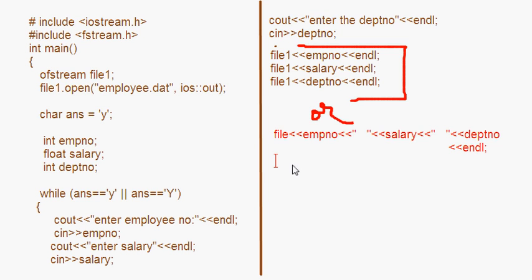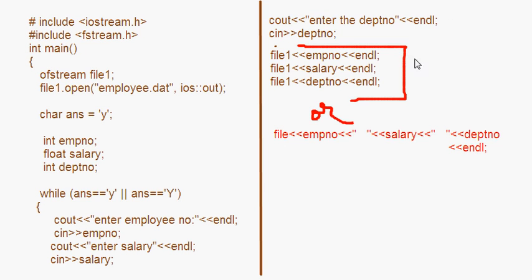So if we use this second format, the whole data for one employee will be written on one line and then it comes to the next line. Otherwise, with the first format using individual endls, it will write the employee number on one line, then salary on the next line, then department number on the next.